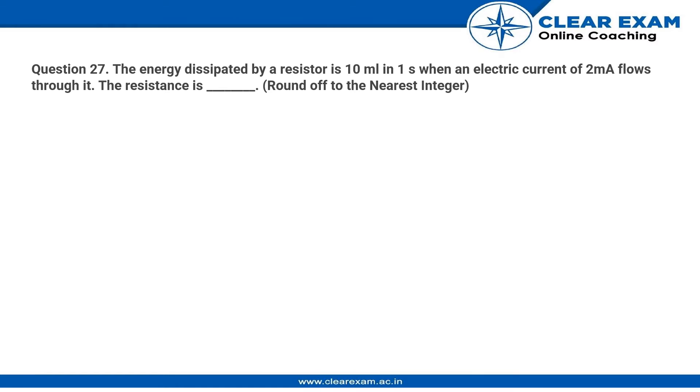We need to find the resistance. We know that the energy and current relation is H equal to I square RT, where H is the heat. I is the current, R is the resistance, T is the time.